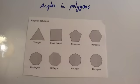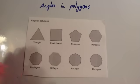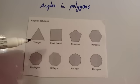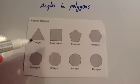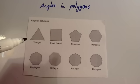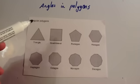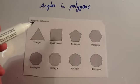In this video we're going to look at angles and polygons. A polygon is a shape with straight sides. I've printed out all the regular polygons here from 3 sides up until 10 sides. So let's just run through those. A triangle, or equilateral triangle, is the regular polygon with 3 sides. Regular means all the angles are the same size and all the sides are the same length.